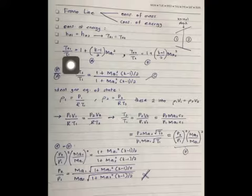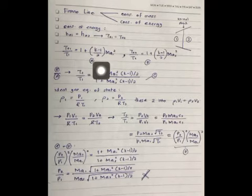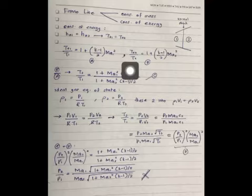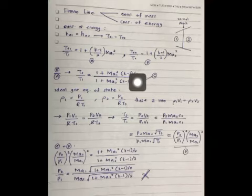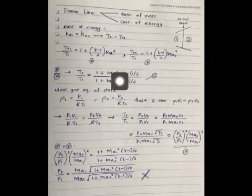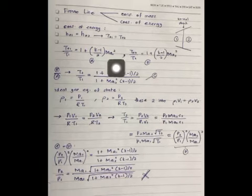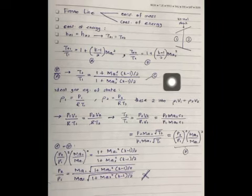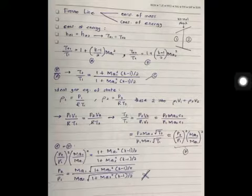This is stagnation temperature formula for both the initial condition and the final condition, 1 and 2. When we divide A over B like this, we can get this formula. So this we state it as C.